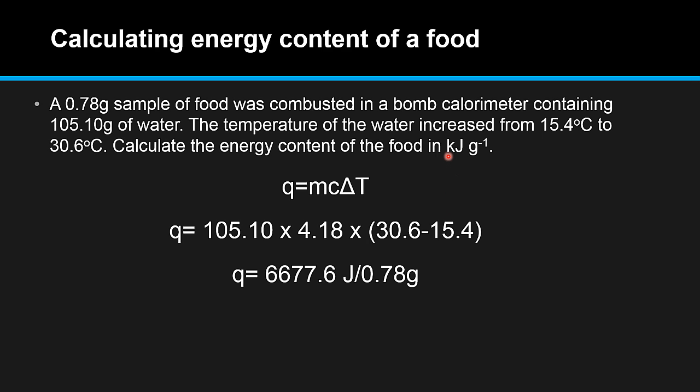But the question is asking for our answer in kilojoules per gram. So in the next part we divide our answer in joules by a thousand to get kilojoules and we multiply by 1.00 divided by 0.78 to convert to per gram. The final answer to two significant figures, because our mass of food is two significant figures, is 8.5 kilojoules per gram.